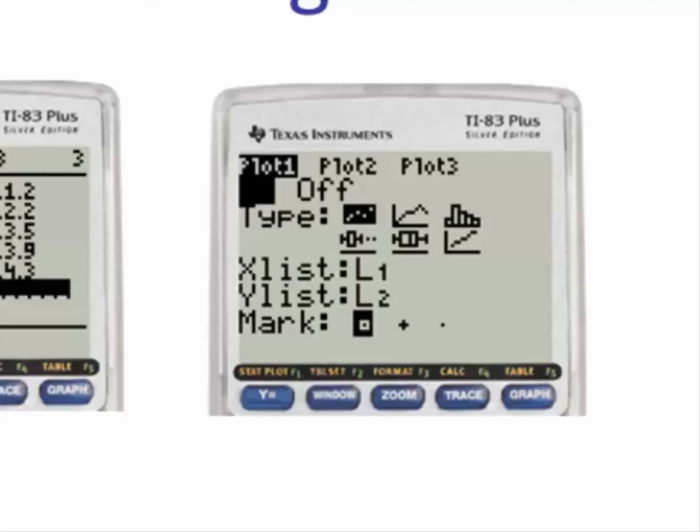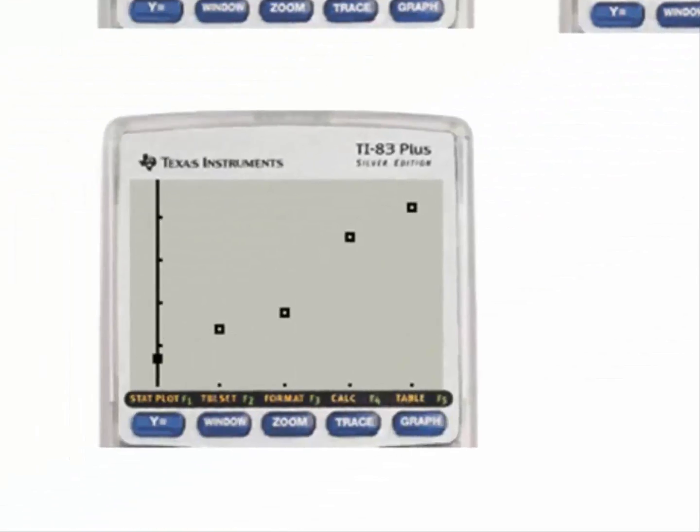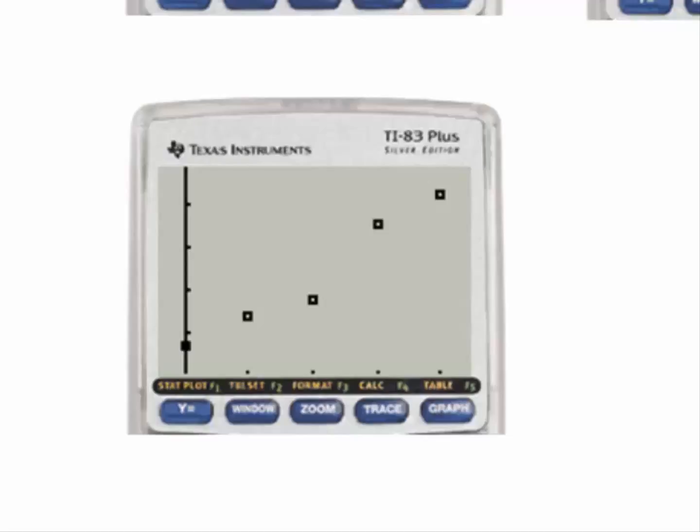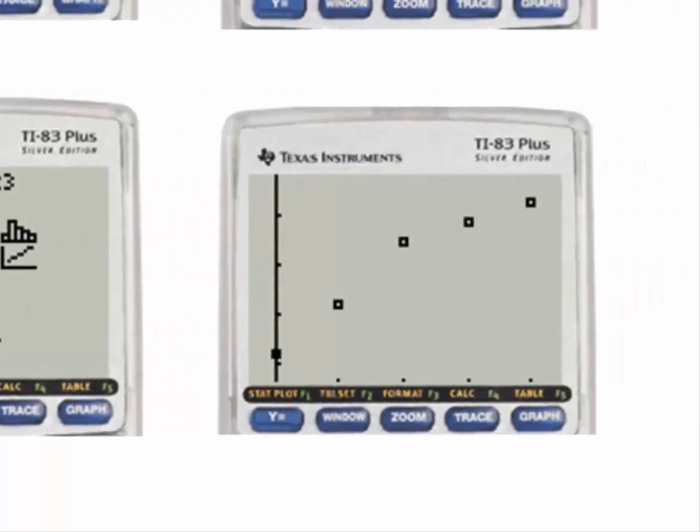Now we want to put the stat plot on. We want to hit Zoom and then number 9 for Zoom Stat. And here is the graph of the data for f. And if we change it to list 1 and list 3, this is the graph of g.